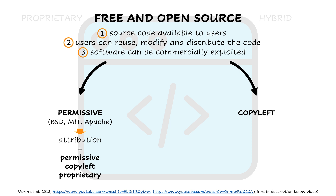For example, TidyR, an R package for data tidying, has an MIT license. This means that anybody who uses TidyR to create new code can release this new code with any permissive, copyleft, or proprietary license.